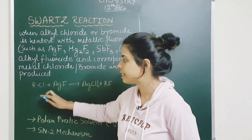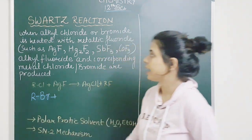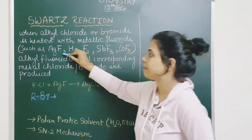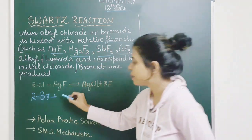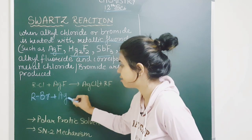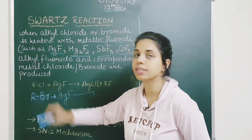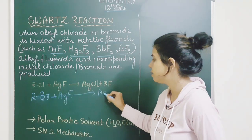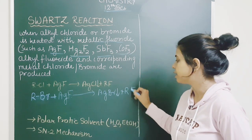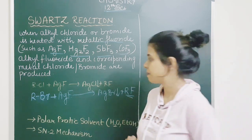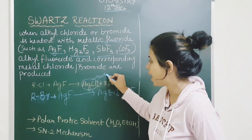So what is basically the Swarts reaction? When any alkyl chloride or bromide — for example RCl, or in place of RCl if I take RBr — is heated with any metallic fluoride, it can be AgF, Hg₂F₂, SbF₃, or CoF₃. Taking AgF here: when AgF is heated with RBr or AgF with RCl, it simply gives you precipitates of AgCl or AgBr along with the formation of alkyl fluoride. The AgCl precipitate is of white color.